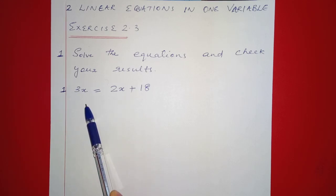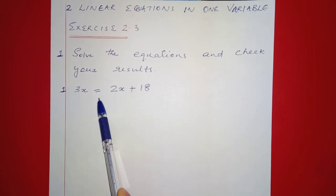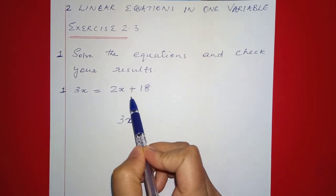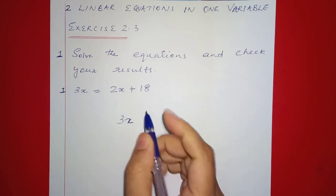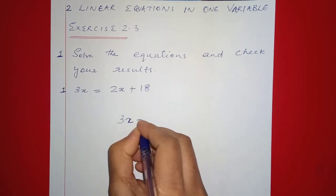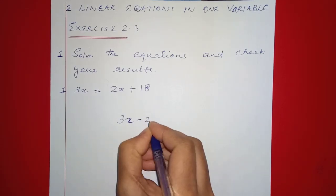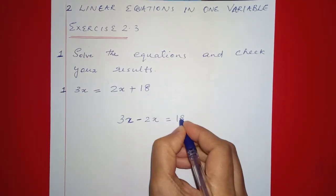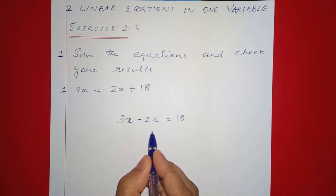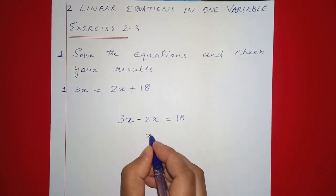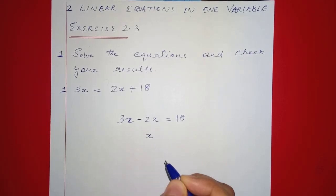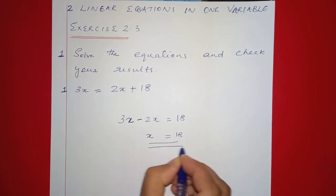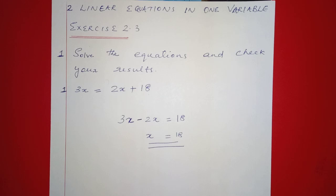We can solve the problem by collecting terms on one side. So 3x minus 2x gives us 1x, which equals 18. So x is equal to 18.